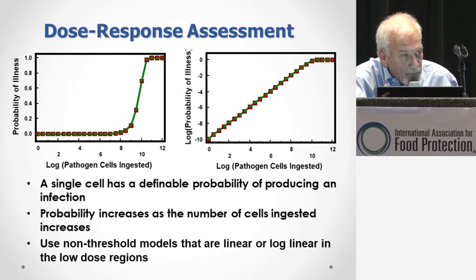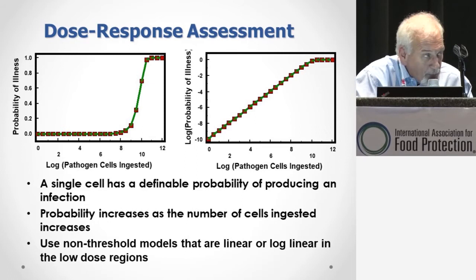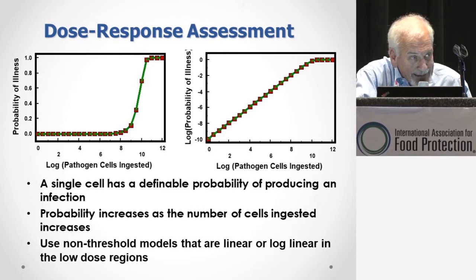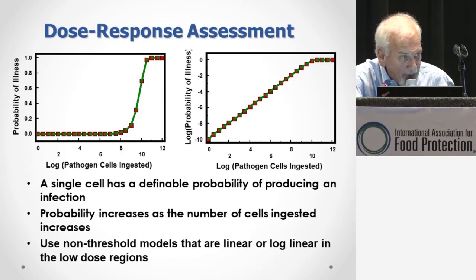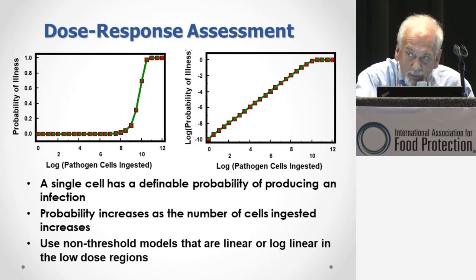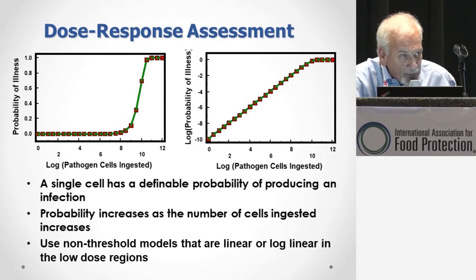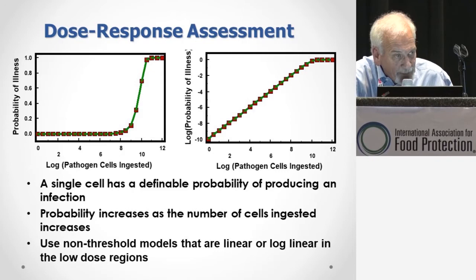What we use is primarily non-threshold models where we either have a linear or a log-linear extrapolation in the low-dose region. These data are often presented in a traditional linear versus log concentration dose format, giving a classic sigmoidal curve — you might look at that and say you have a threshold, but the answer is no, you don't, particularly when dealing with large numbers of microorganisms. We tend to use a log-log expression, and what you see is that most of the curve is linear as you go down in terms of the overall probability of disease.